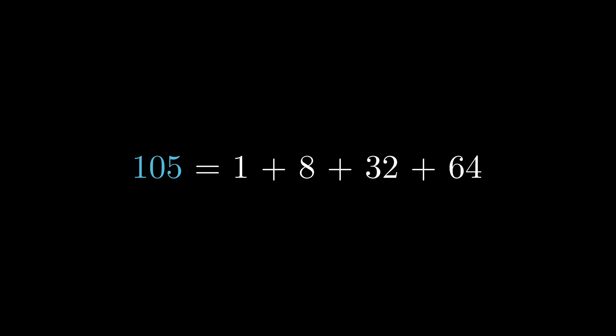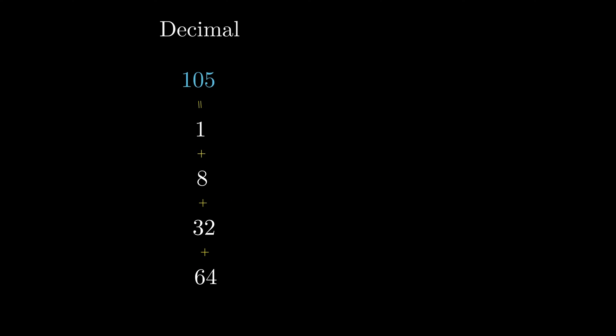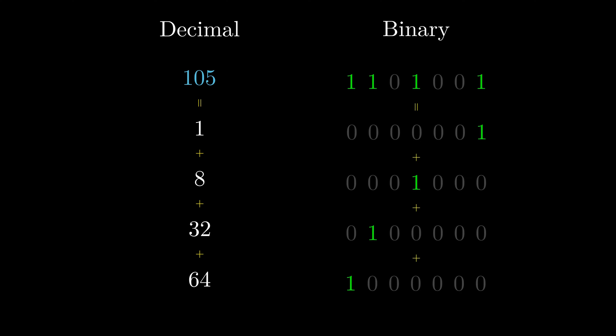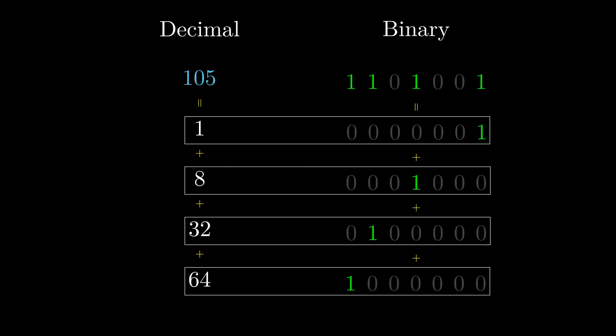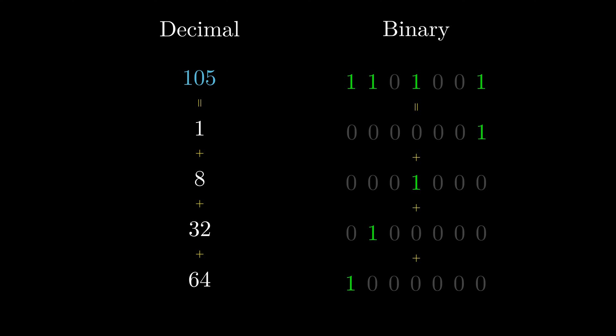The key to this algorithm is how to write n as the sum of powers of 2. Let's take a look at the binary form of those numbers. There are four 1s in the binary form of 105. On the other hand, there is only one 1 in the binary form of 1, 8, 32, and 64. We only need to break up the four 1s in 105 to get the other four numbers. This is how we can decompose n as the sum of powers of 2.